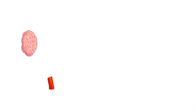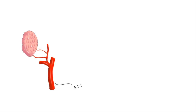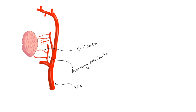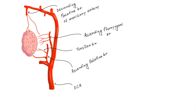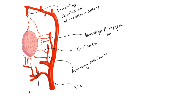The tonsil is supplied by branches of the external carotid artery — mainly five arteries. The tonsillar branch of the facial artery is the main supply. Then the ascending palatine branch of the facial artery, the ascending pharyngeal branch of the external carotid artery, the descending palatine branch of the maxillary artery, and the dorsal lingual branch of the lingual artery.